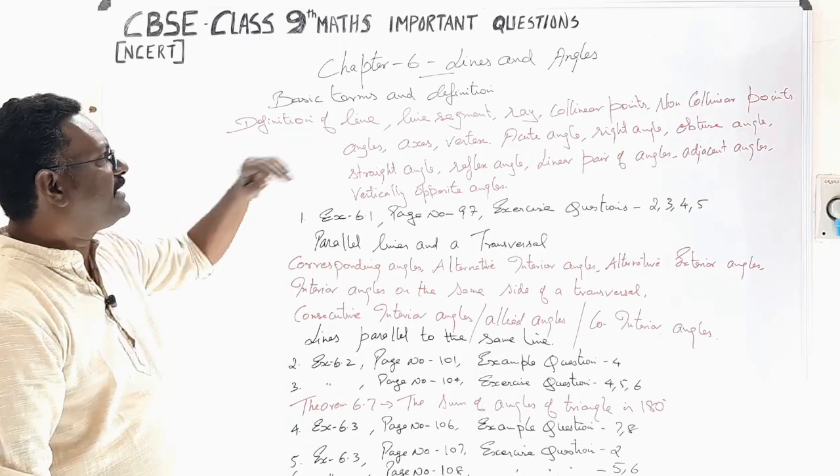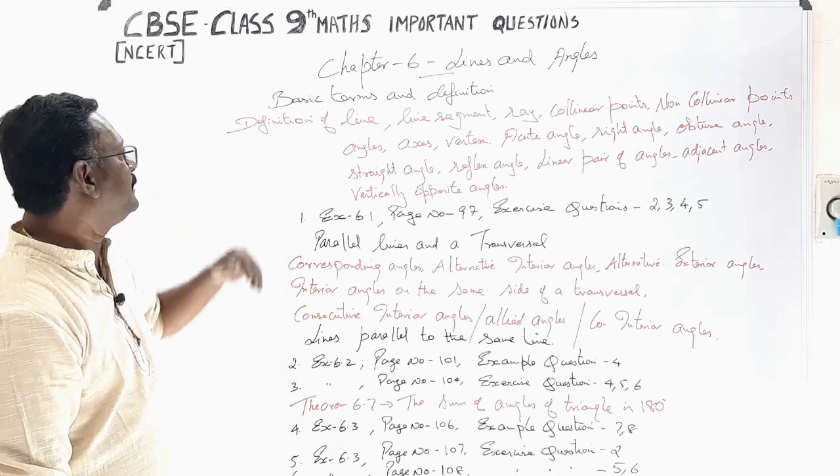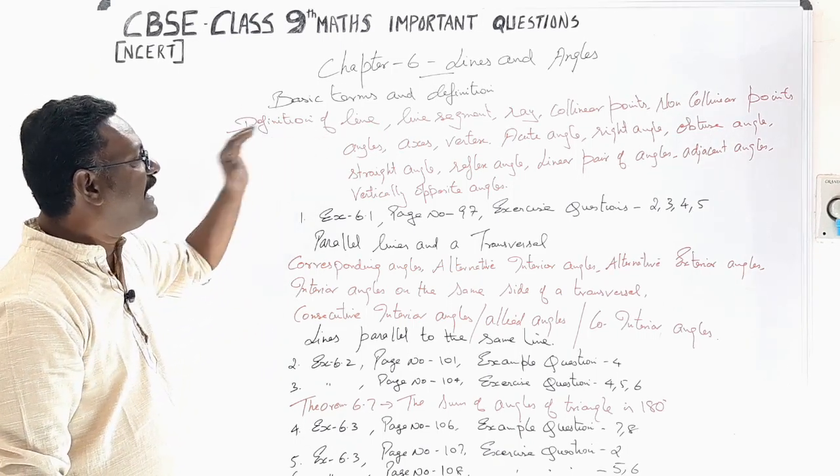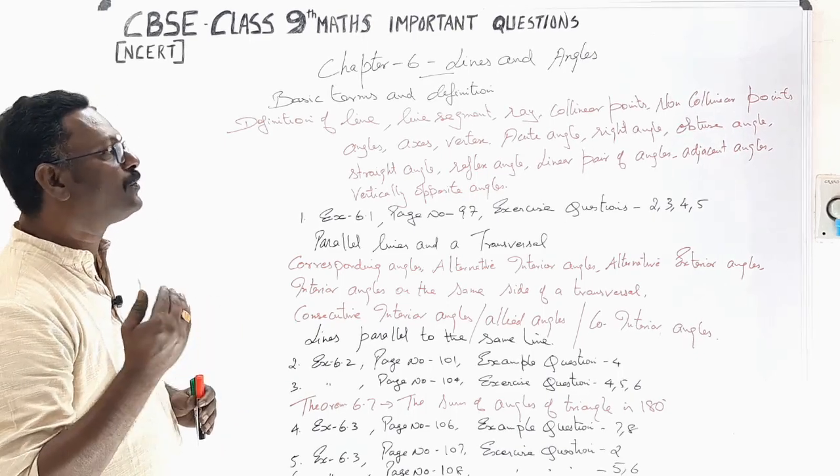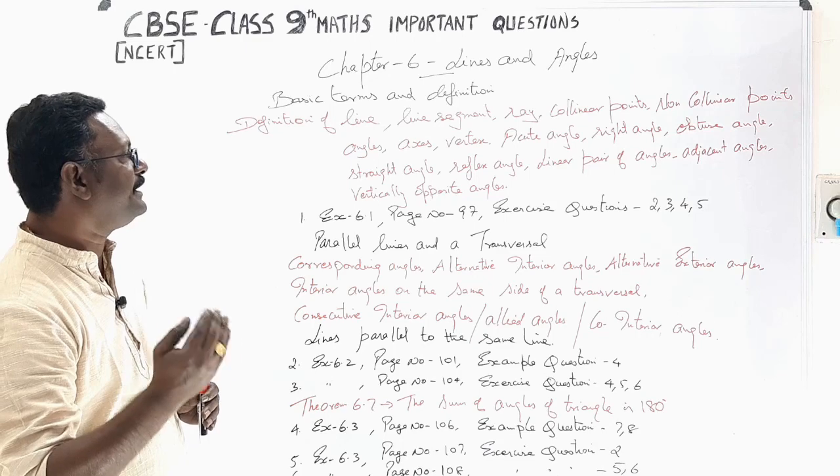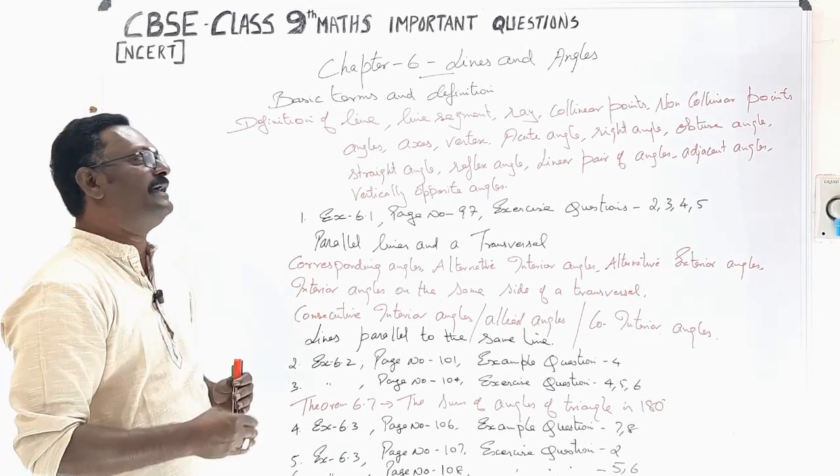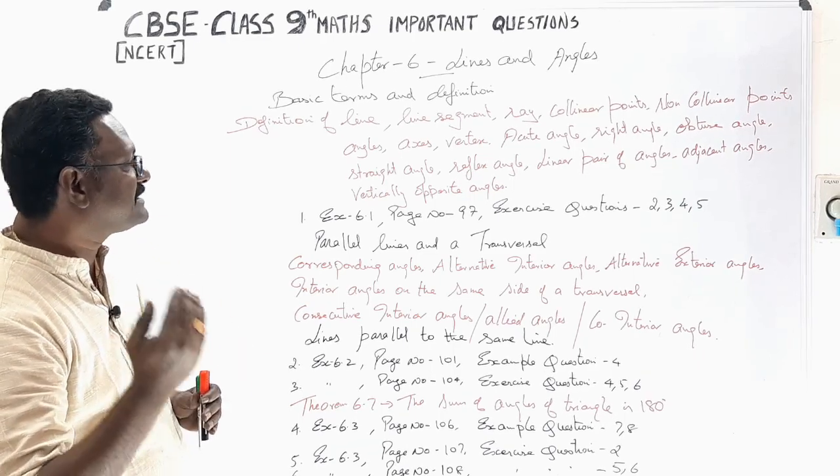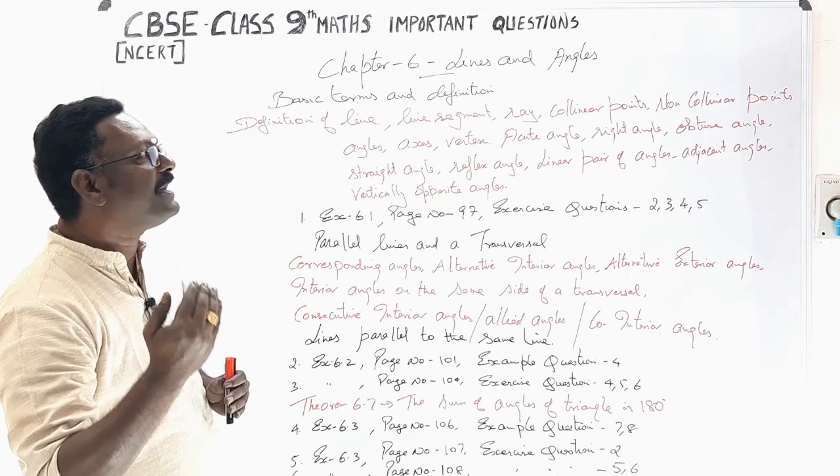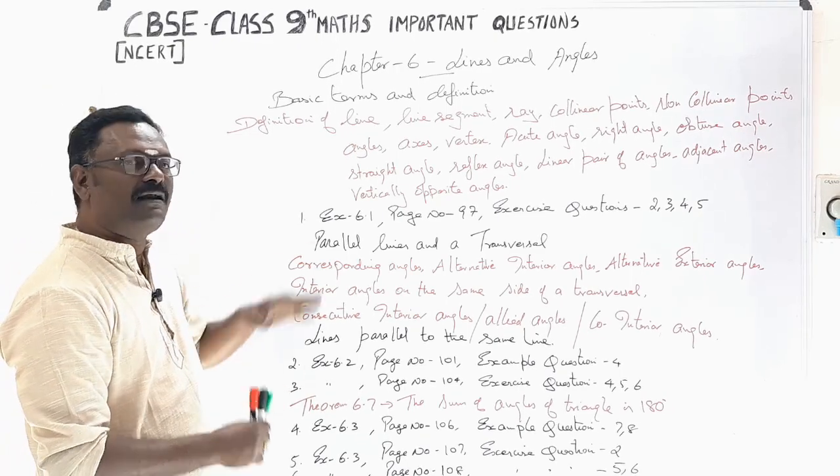Chapter 6 Lines and Angles basic terms and definitions in the heading. Definitions of a line, line segment, ray, collinear points, non-collinear points, angles, axis, vertex, acute angle, right angle, obtuse angle, straight angle, reflex angle, linear pair of angles, adjacent angles, vertically opposite angles. We will talk about this very thoroughly.